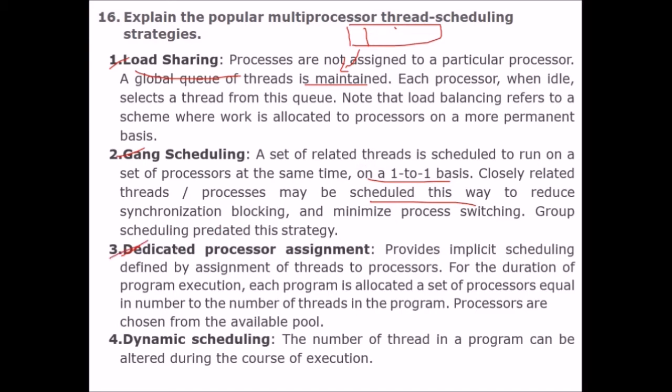Dedicated processor assignment: implicit scheduling is defined by the assignment of threads to processors. For the duration of program execution, each program is allocated a set of processors equal to the number of threads in the program, chosen from an available pool.